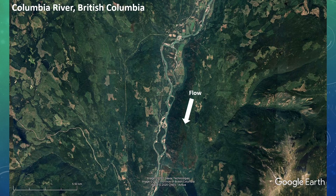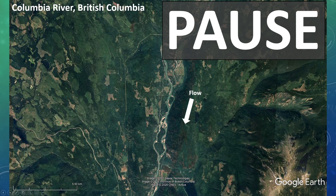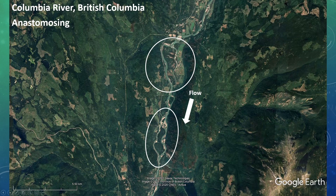Now we're going to move on to some extra examples. If those previous four satisfied your understanding, you can skip to the last minute of the video. However, if you want to keep playing along, I have four more examples for you. This is the Columbia River in British Columbia. This one's a bit tougher as the stream is a little bit smaller and we're more zoomed out. But if you guessed anastomosing stream, you'd be correct. The key indications are these vegetated islands dissected by stable channels with very little exposed sediment.